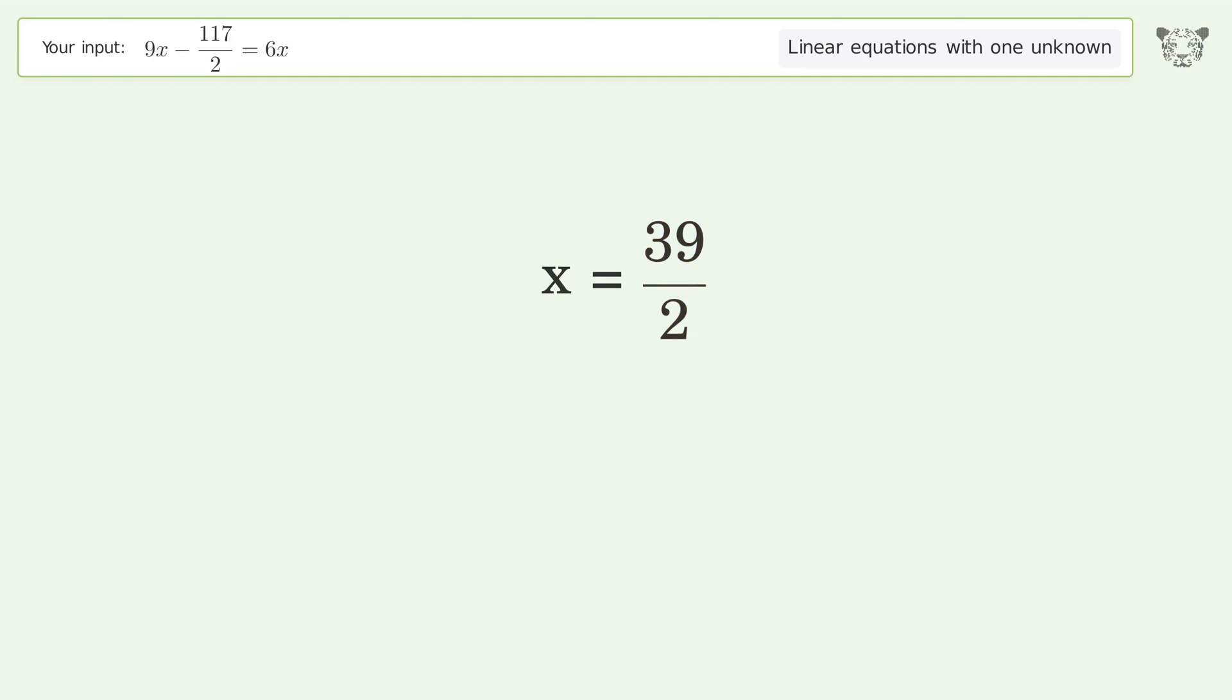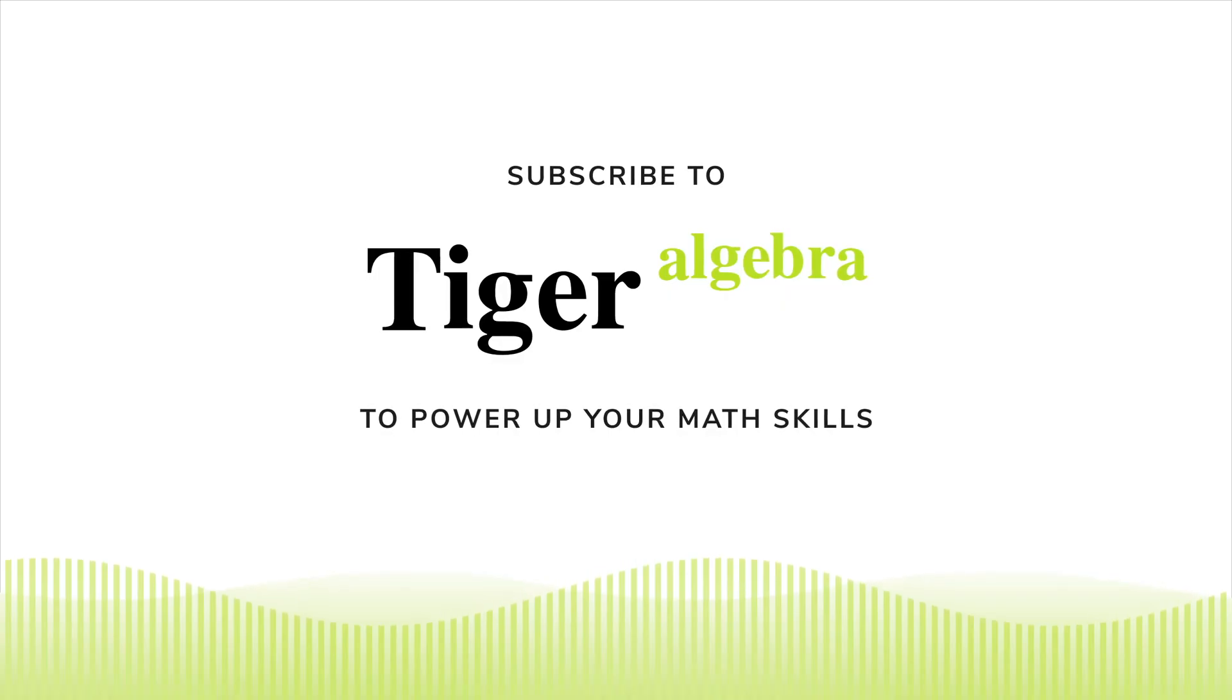And so the final result is x equals 39 over 2.